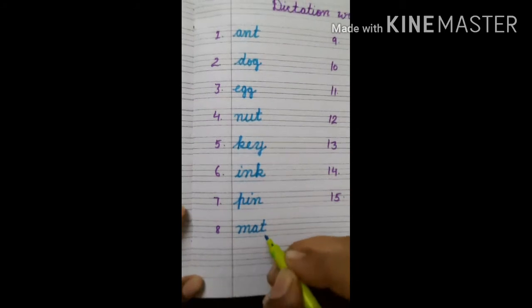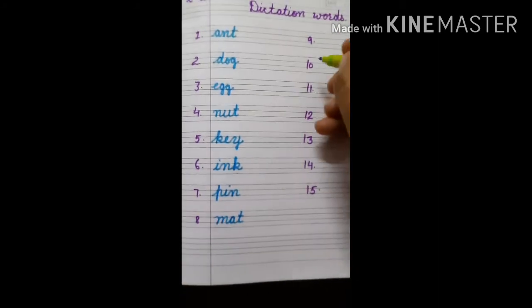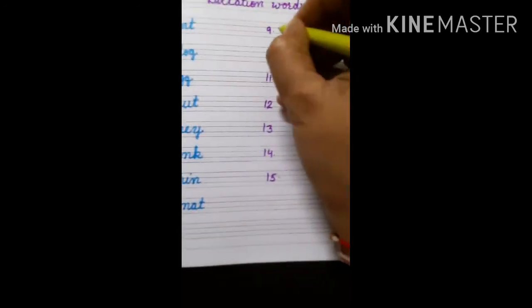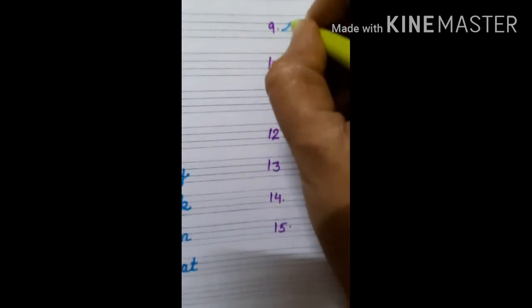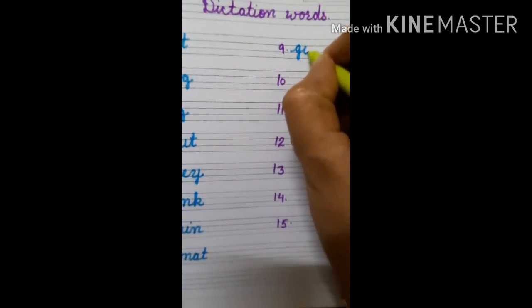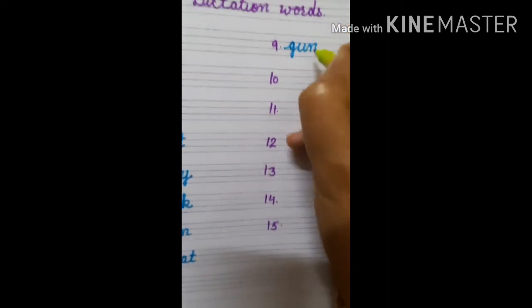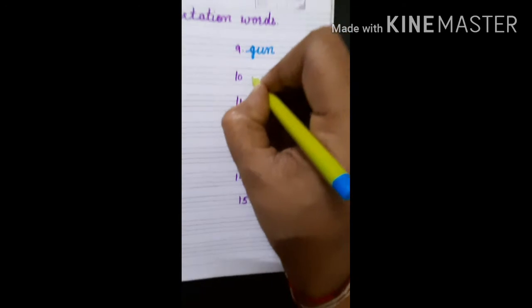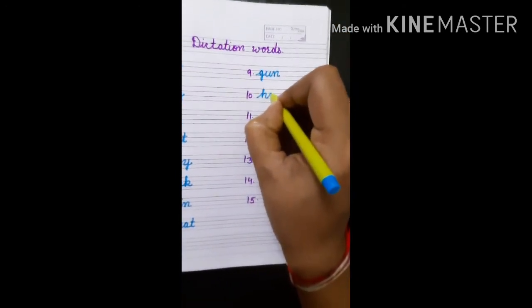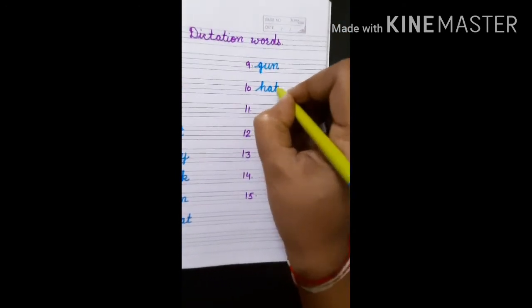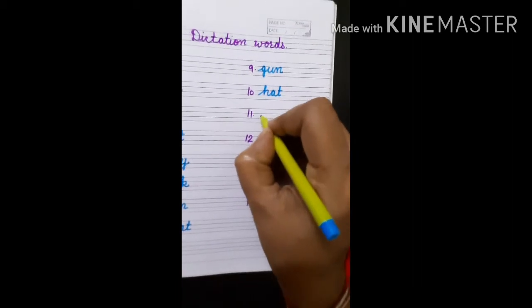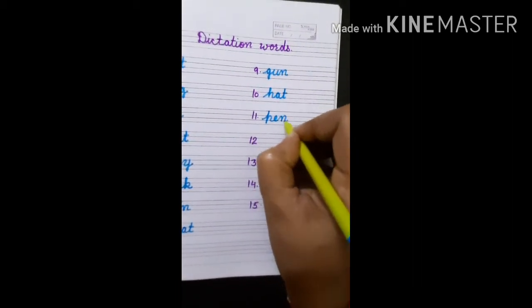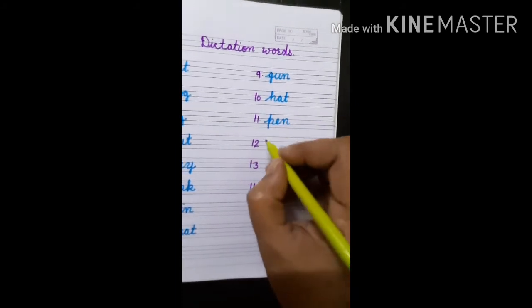Number nine: gun - G U N - gun. Number ten: hat - H A T - hat. Number eleven: pen - P E N - pen.